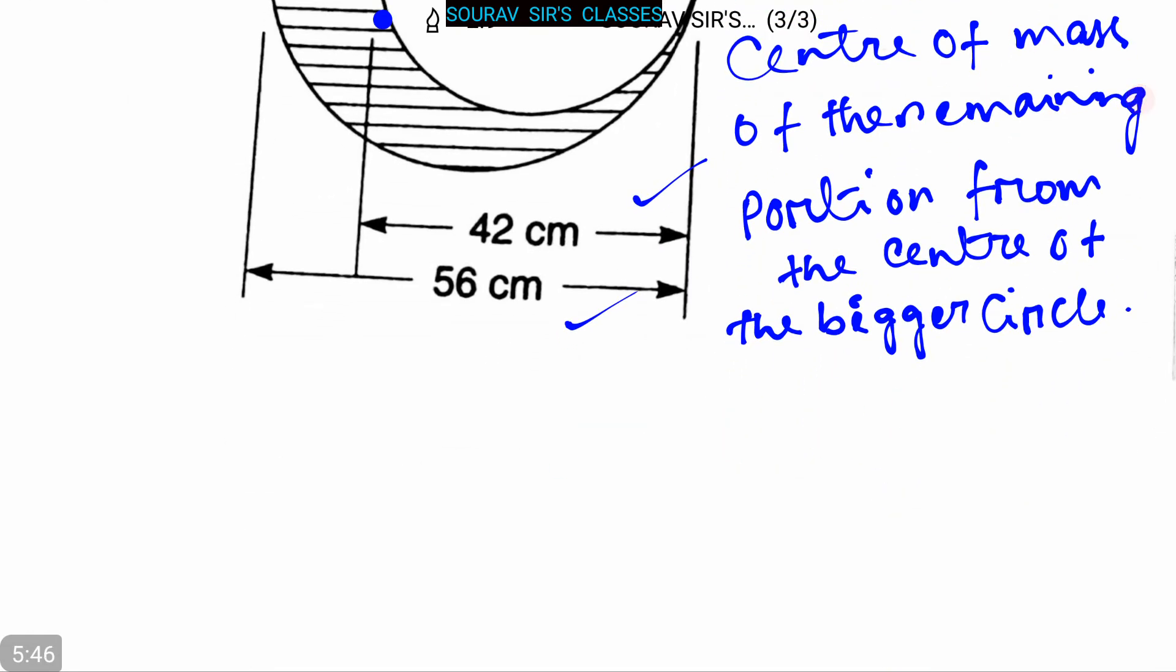So we can write it as A1r1 equals A2r2. From this we can rewrite it as r1 equals A2 by A1 into r2.